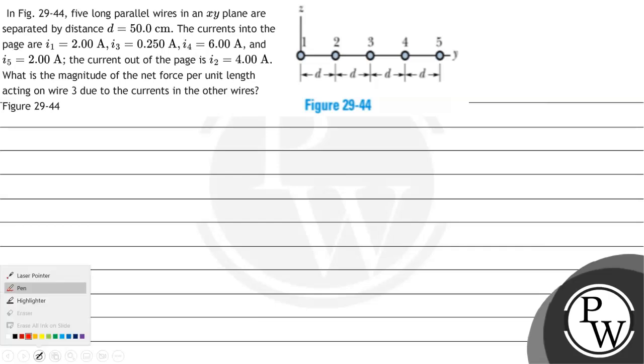Hello, let's read the question. The question says in figure 29-44, five long parallel wires in an xy plane are separated by distance d equals 50 centimeters. The currents into the page are i1 equals 2 amperes, i3 equals 0.25 amperes, i4 equals 6 amperes, and i5 equals 2 amperes. The current out of the page is i2 equals 4 amperes. What is the magnitude of the net force per unit length acting on wire 3 due to the currents in other wires?